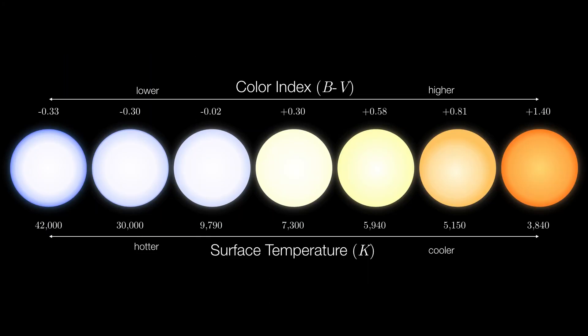So the color index of the star is correlated to the star's temperature. Again, the lower the value, the hotter it's going to be, and the higher the value, the cooler it's going to be.